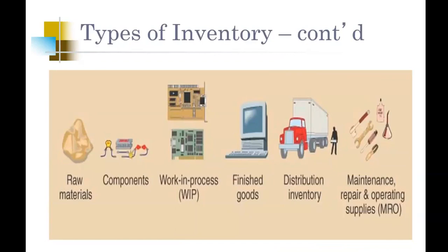Whenever I'm producing all these goods, it takes a number of different machines to make these parts. For those machines to operate, I have maintenance, repair, and operating supplies — that's the oil, the lubricant, the grease that goes into keeping those machines operational. The maintenance, repair, and operating supplies is probably one of the most overlooked pieces of inventory, but they are the most important. Without my MRO supplies, if my machine goes down and I don't have those parts, my factory shuts down.